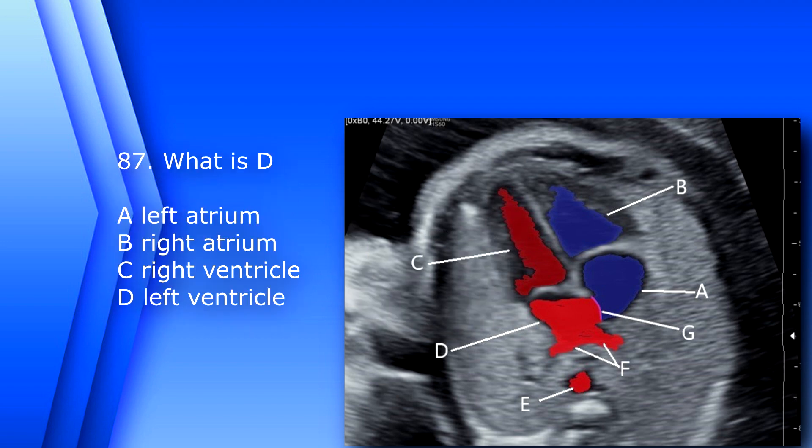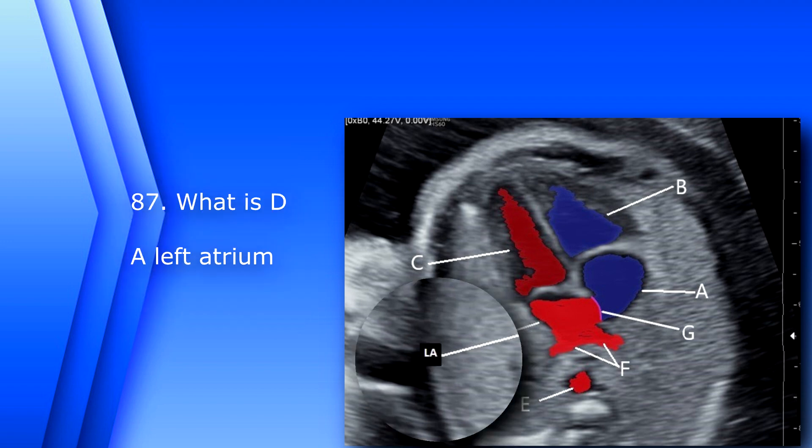Question 87. What is D? A. Left atrium. B. Right atrium. C. Right ventricle. D. Left ventricle. The answer is A, left atrium.